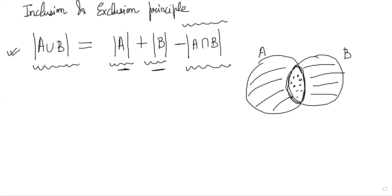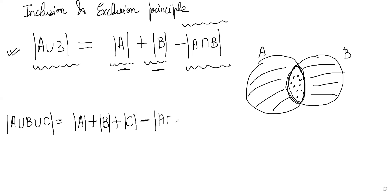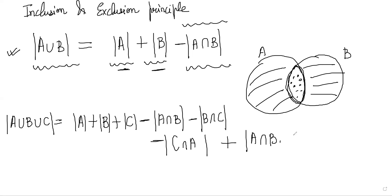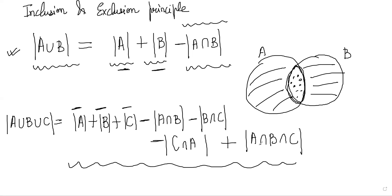This principle can be generalized: |A union B union C| equals |A| + |B| + |C| minus |A intersection B| minus |B intersection C| minus |C intersection A|, plus |A intersection B intersection C|. Here, the elements in the triple intersection are counted three times in the first three terms, then subtracted three times in the next three terms — so they're not counted at all. You have to add them once more back. Similar arguments help us understand this result.